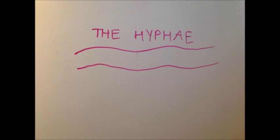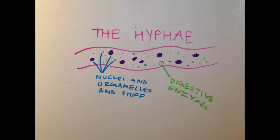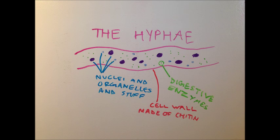Hyphae can be considered the highway inside the fungi. Instead of groups of cells assembled into tissue, the hyphae acts as a long thread-like filament with all the organelles moving around. They hold the digestive enzymes used for absorbing nutrients and have a tubular cell wall made of chitin — a completely different structure than the cells in plants and animals, since it acts as more of a tube than a cell.